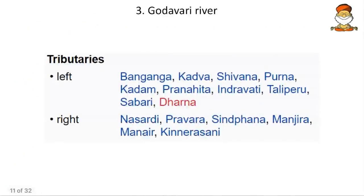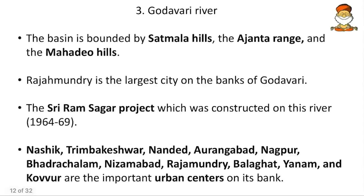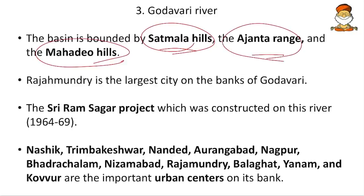Make sure to focus on the important tributaries shown on the map. UPSC will interlink subjects — for example: on the bank of which river is the Ajanta temple located? The Godavari basin is bounded by Satmala Hills, Ajanta Range, and Mahadev Hills — locate these on a map. Rajamahendri is the largest city on the bank of Godavari. The Sriram Sagar project was constructed from 1964 to 1969 — a very historical project.